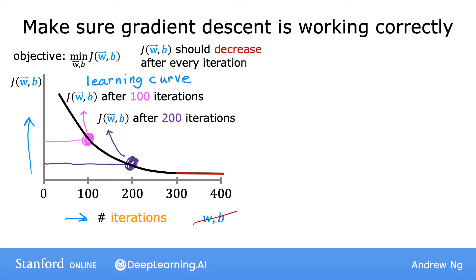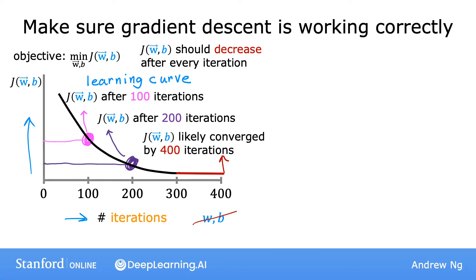Another useful thing that this plot can tell you is that by the time you reach maybe 300 iterations or so, the cost J is leveling off and is no longer decreasing much. And by 400 iterations, it looks like the curve has flattened out. This means that gradient descent has more or less converged because the curve is no longer decreasing.